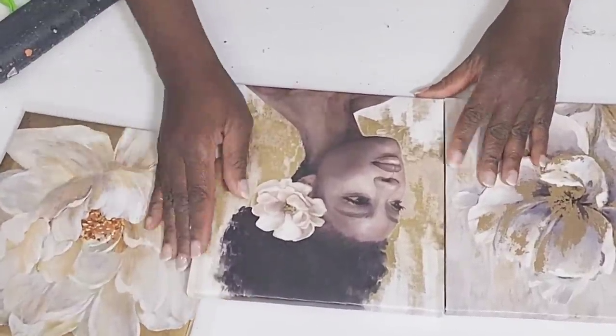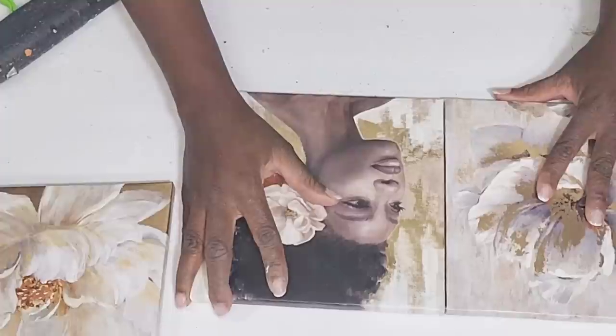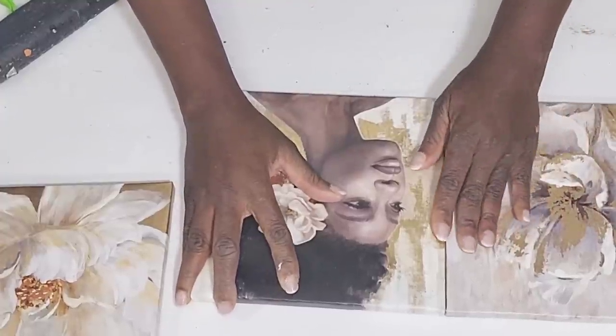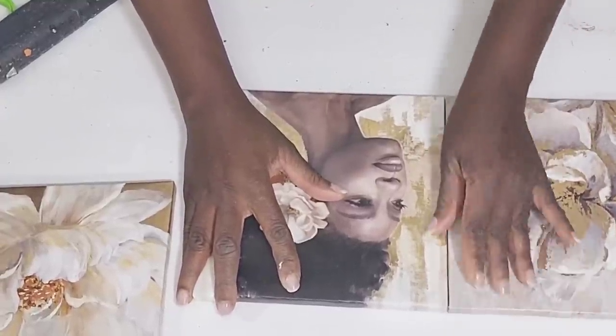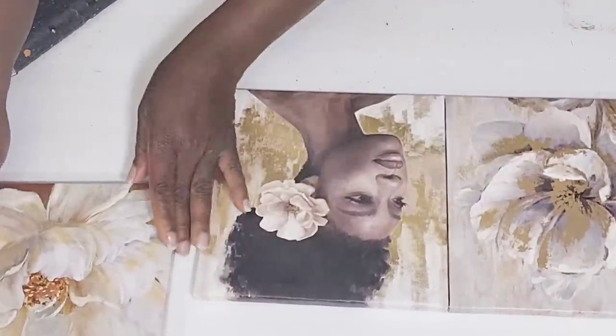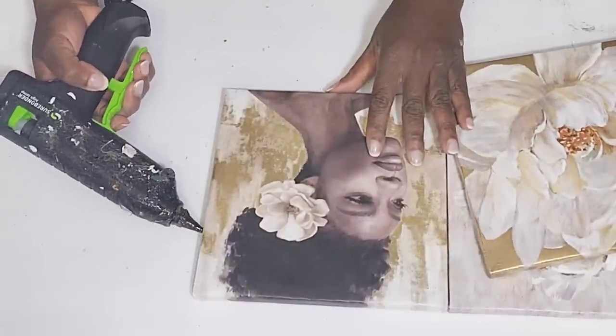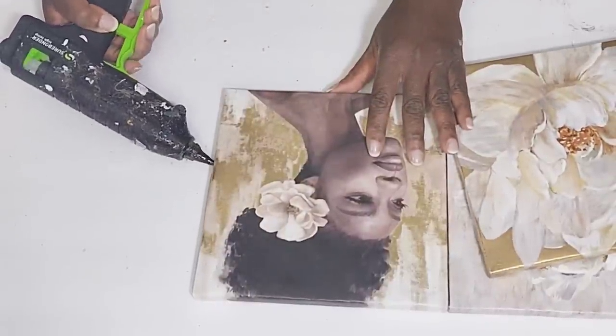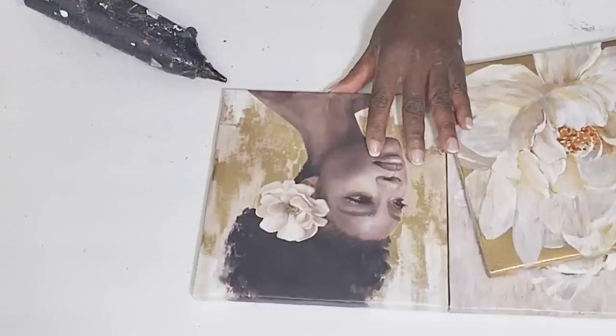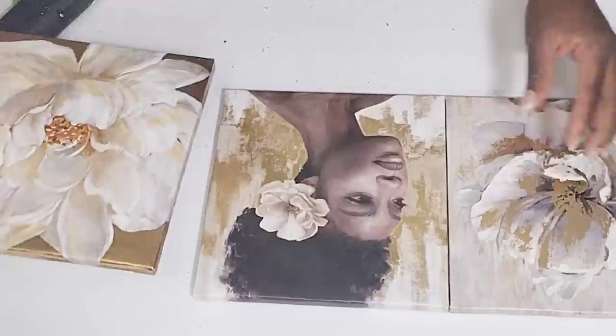Now, if you can find some canvases that are similar pictures that you want to kind of merge together, I think this is a really simple, cute DIY where you can make some large wall art. All I'm doing is taking some hot glue along the sides to attach these. I just thought this was so pretty.